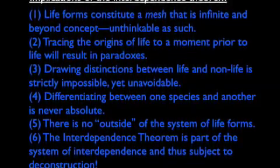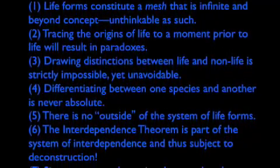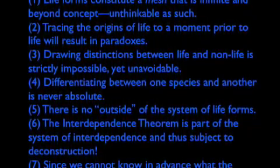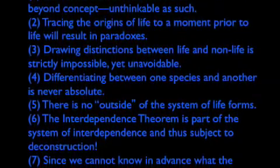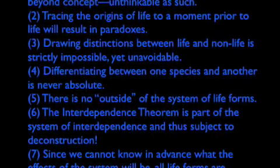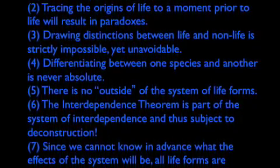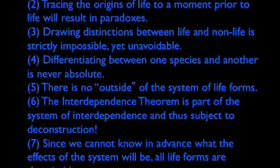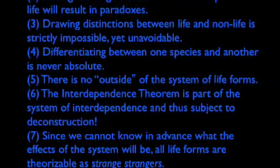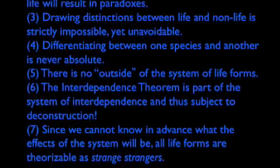3. Drawing distinctions between life and non-life is strictly impossible yet unavoidable. 4. Differentiating one species from another is never absolute. 5. There's no outside of the system of life forms. 6. The interdependence theorem is part of the system of interdependence, and thus subject to deconstruction. 7. Since we cannot know in advance what the effects of the system will be, all life forms are theorizable as strange strangers.